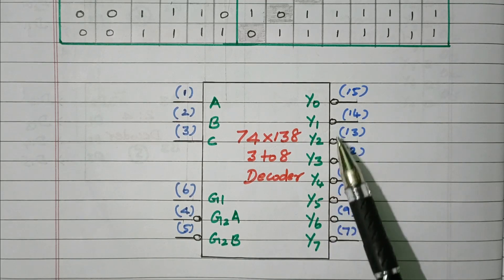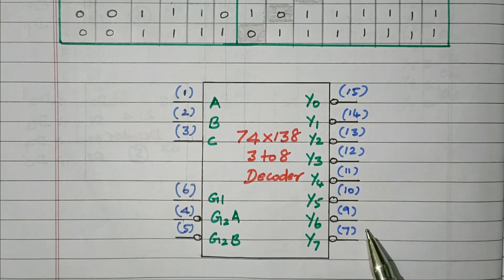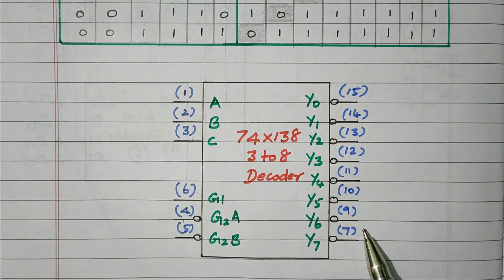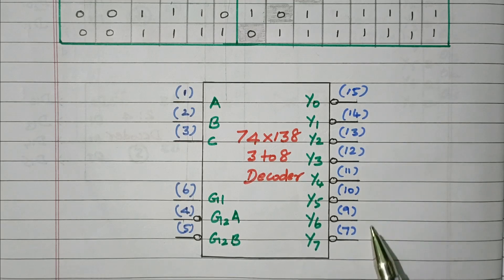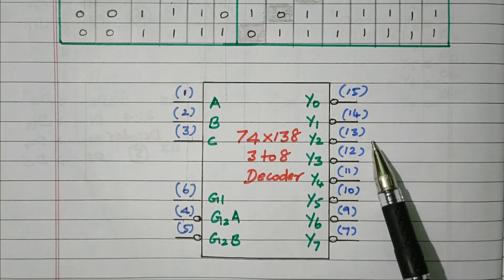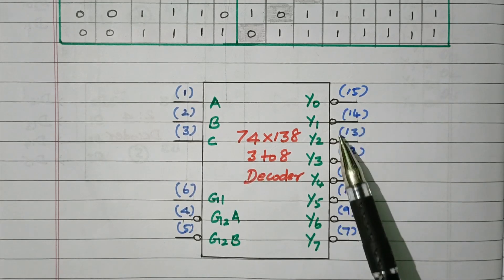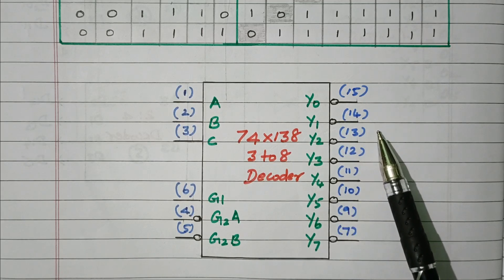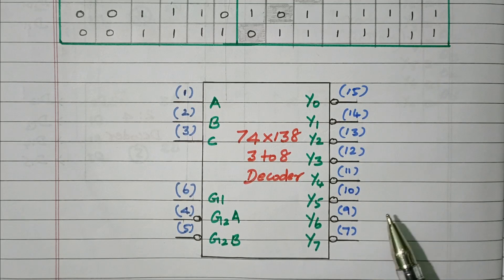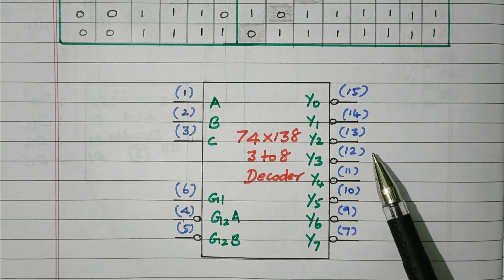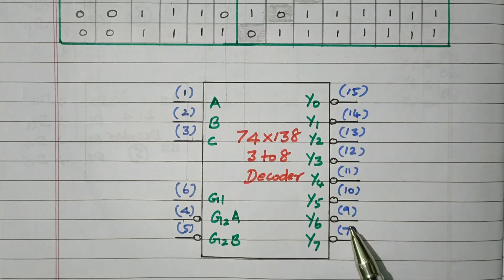Normally in a decoder, only one output will be high and all other outputs will be low — only one pin will be high, the other pins are low. For example, the pattern would be 1,0,0,0... or 0,1,0,0... based on the 3 inputs. But because of the active-low (inverted) outputs here, only one output will be 0 and all remaining outputs will be 1. It is inverted — normally only one is 1 and all are 0, but here all outputs will be 1 and only one output will be 0.